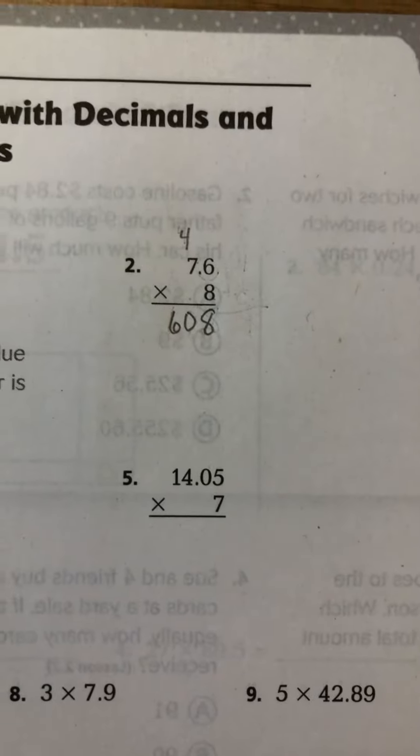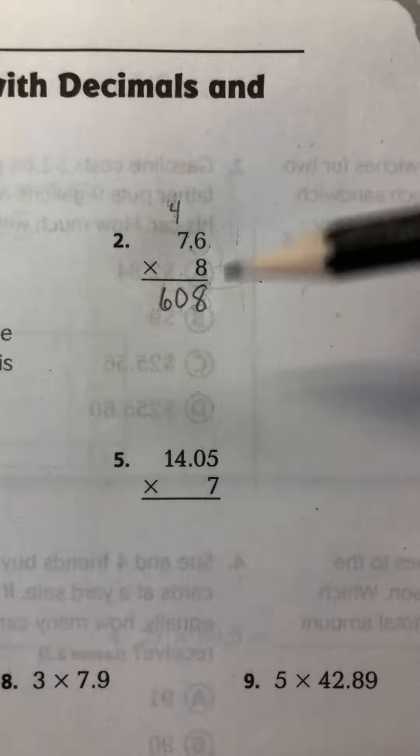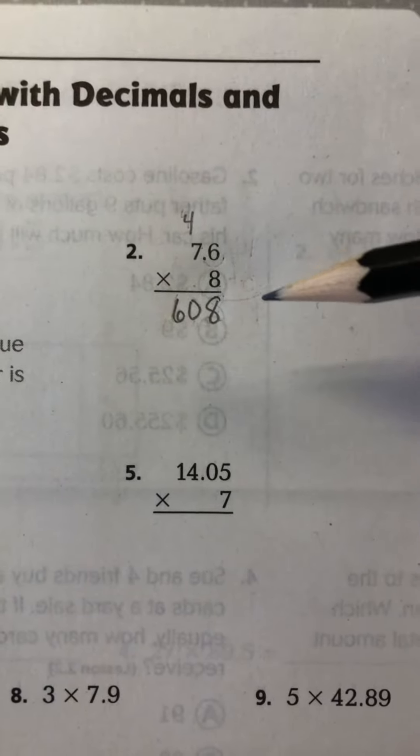So now we have 608. If you leave it like that, it would be incorrect because that is the answer to 76 times 8, not 7.6 times 8.